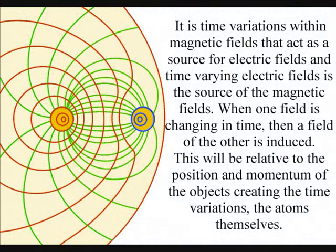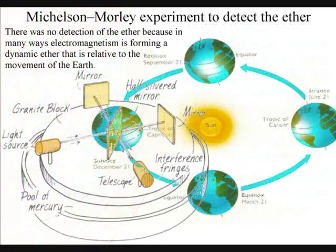In such a theory, it would be easy to think of electromagnetism as a dynamic ether that moves relative to the Earth. Therefore, it would not show up in any experiment that was relative to the movement of the Earth.